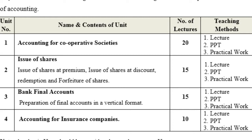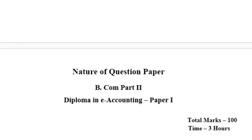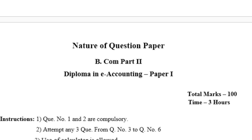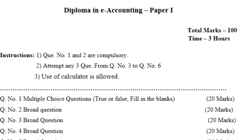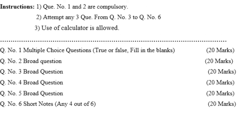After discussing the syllabus, we also discussed the nature of the question paper for Diploma in Accounting. Question number 1 and question number 2 are compulsory. Attempt any 3 questions from question number 3 to 6. Use of basic calculators is allowed. Question number 1 includes multiple choice questions, true or false, and fill in the blank.